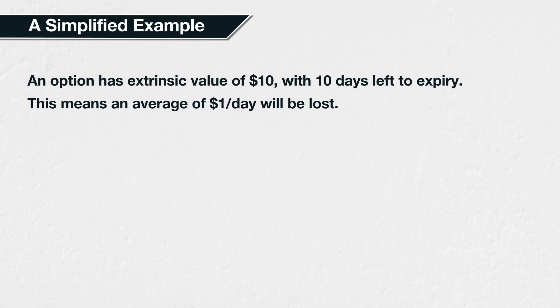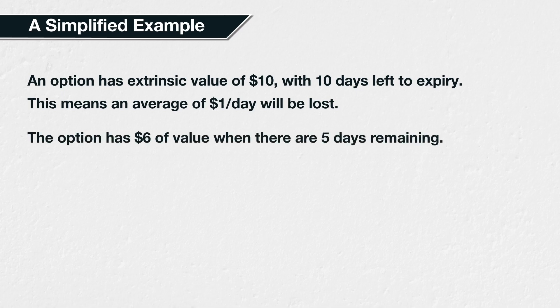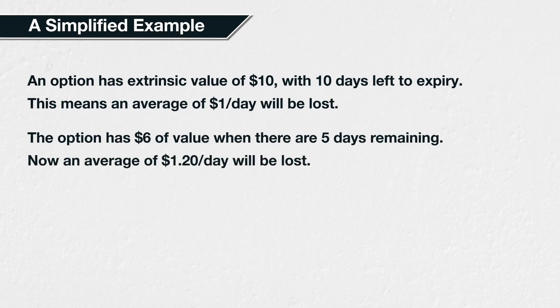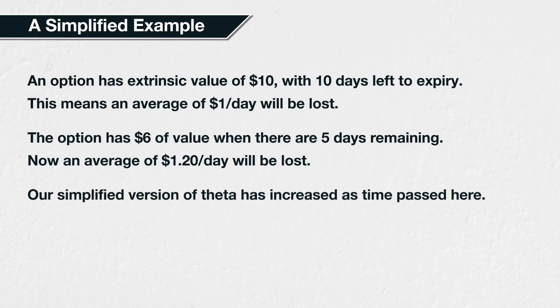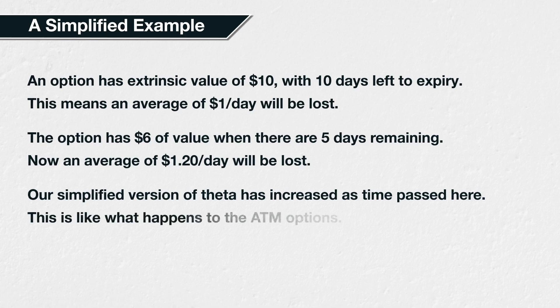Now imagine that 5 days pass, but that the option only loses $4 in value during that time. The option now has a value of $6 and 5 days left to expiry. We could now say that this option is going to lose an average of $1.20 a day for the next 5 days, calculated as $6 divided by 5 days. So our simplified average version of theta has now increased from $1 to $1.20. This time, 50% of the time passed, but only 40% of the option's value was lost. As a result, our simplified version of theta increased. And this is essentially what's happening for the theta of at-the-money options, again with slightly more complicated maths behind it.